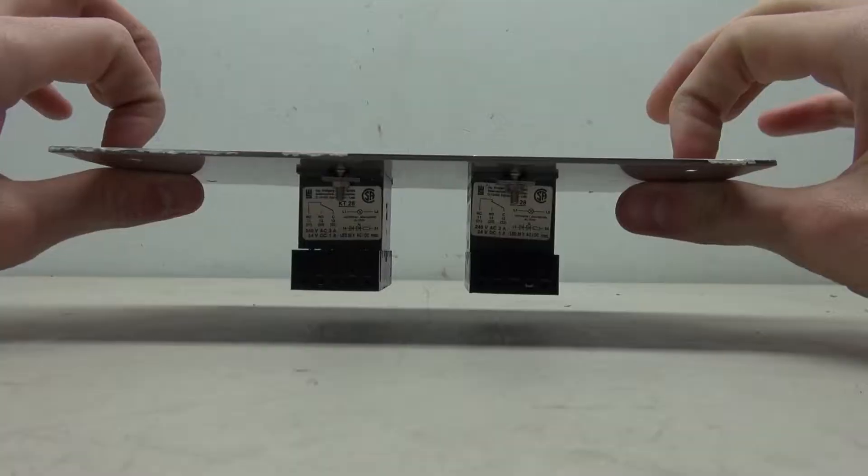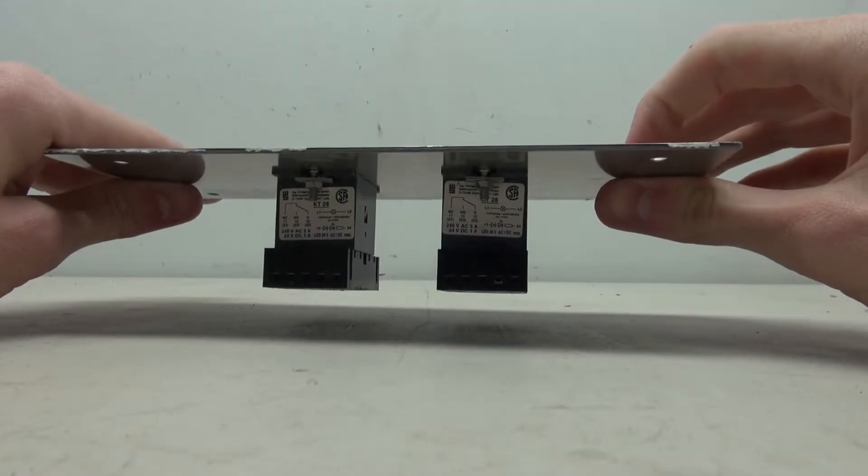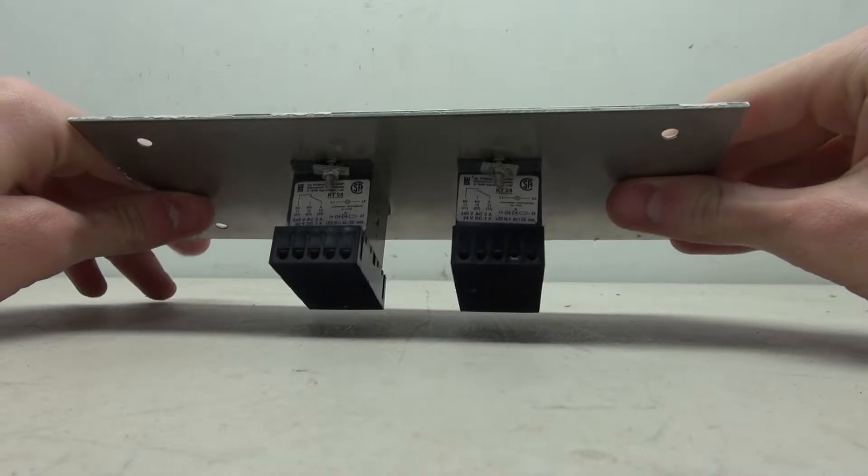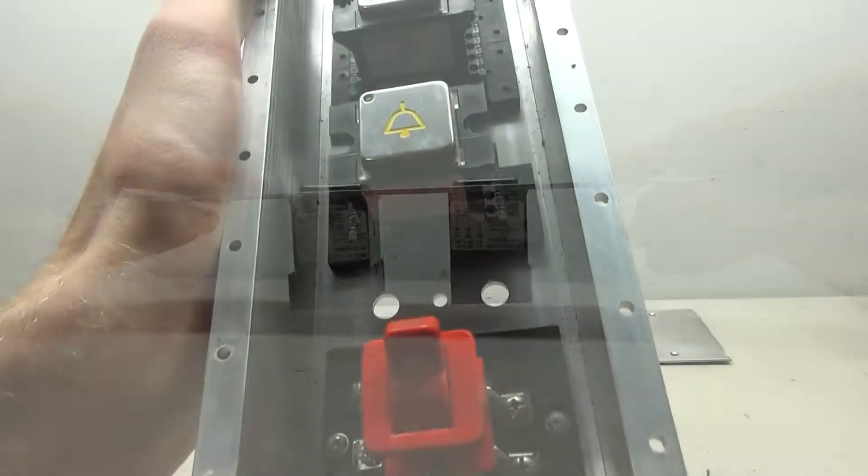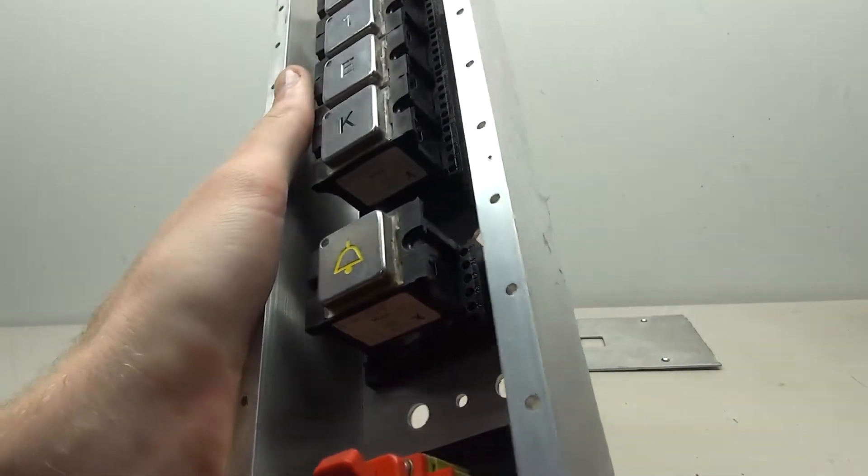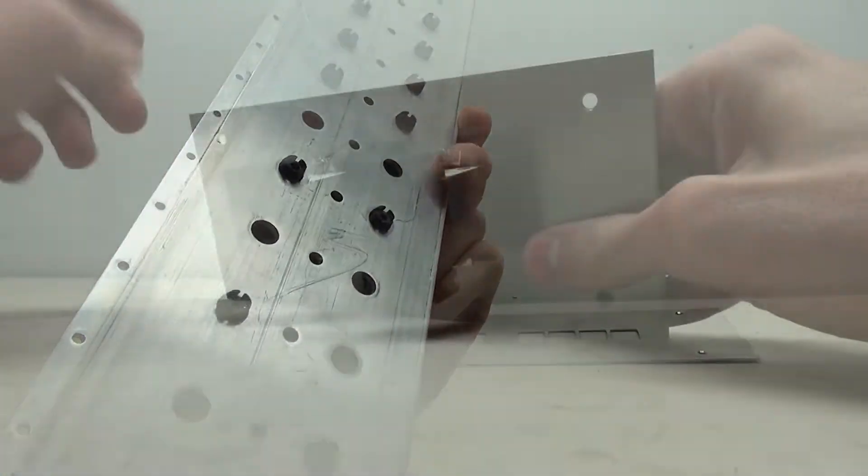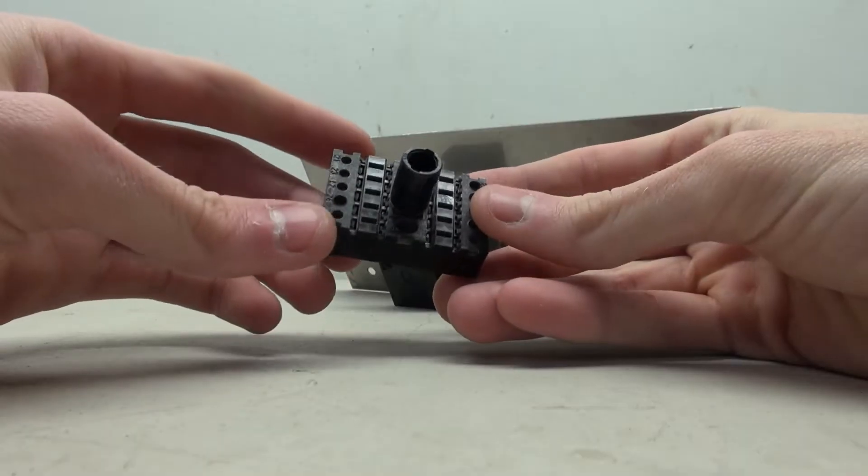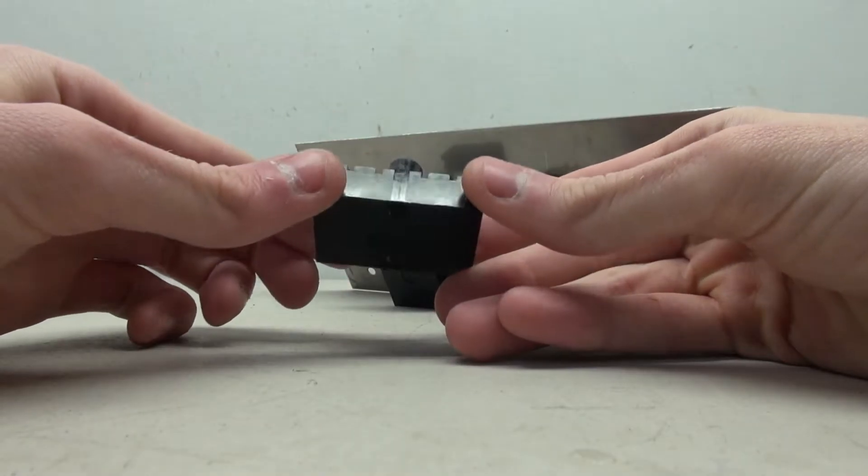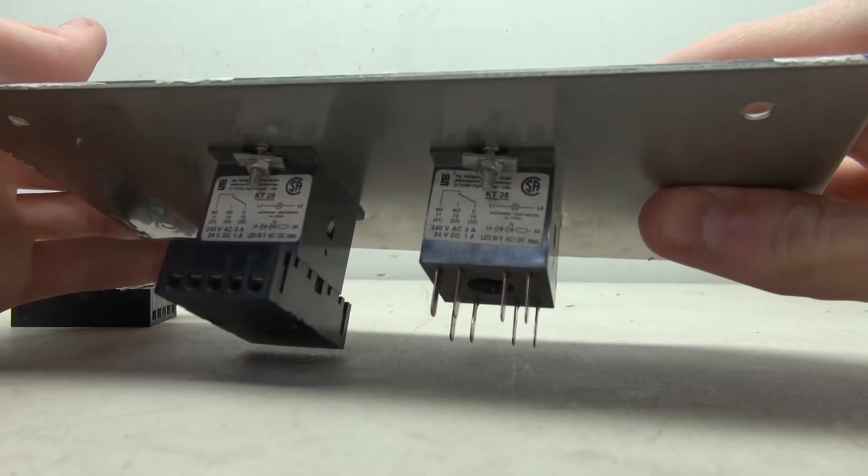Something that's quite interesting about these Schaefer buttons is the modularity of them. They can be mounted directly to the plate just like we're seeing here, or they can be back-mounted to a box and then the plate sits on top. Each of these buttons have a separable base, and this base can be used with a bunch of different types of Schaefer buttons.